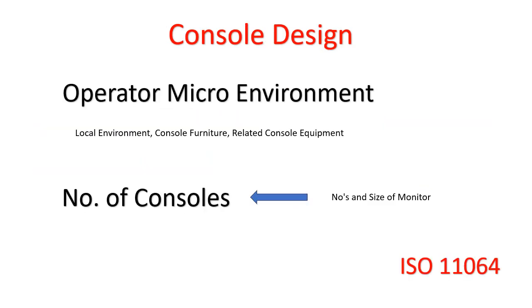With respect to console design, there are two major things: one is the operator micro environment and another is the number of consoles. Operator micro environment means the local environment, console furniture, and related console equipment. The number of consoles covers how many consoles are required, what the size of the monitor will be, and whether it will be double stack or single stack. ISA 101 also refers to another international standard, ISO 11064, within the console design section.